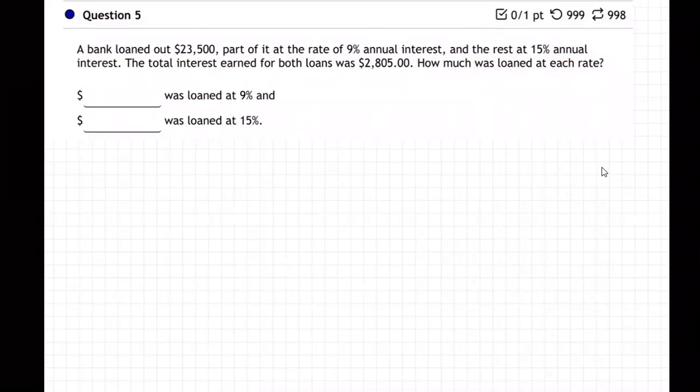Okay, well, this is a good little word problem here. So we're going to let X be the amount loaned at the 9%, Y be the amount loaned at the 15%. If we have two letters, you know we need two equations, right? So I'm going to have to get two equations. What's the first one?